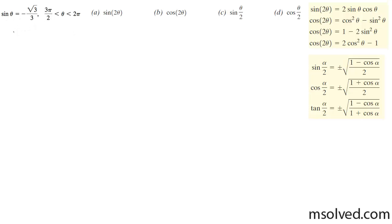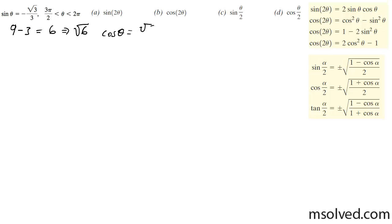Cosine is going to be equal to — so I know my y value is equal to the square root of 3, my hypotenuse value is 3, so 3 squared is 9 minus the square root of 3 squared, which is just 3, equals 6. That means my x value is equal to the square root of 6. So the cosine theta is going to be equal to the square root of 6 over 3.